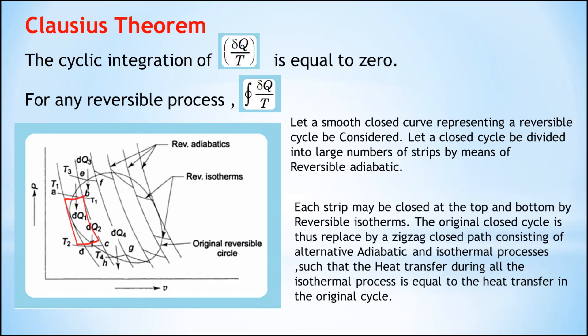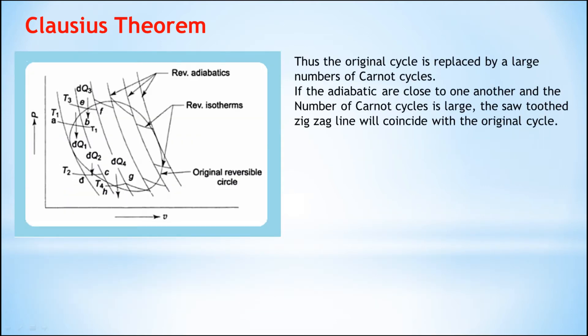Each strip is closed at the top and bottom by reversible isotherms. The original cycle is thus replaced by a zigzag closed path consisting of alternating adiabatic and isothermal processes, such that the heat transfer during all isothermal processes is equal to the heat transfer in the original cycle.